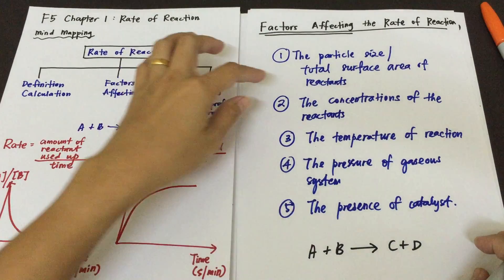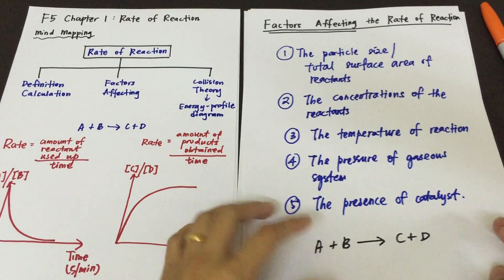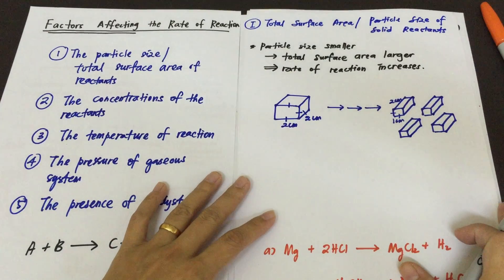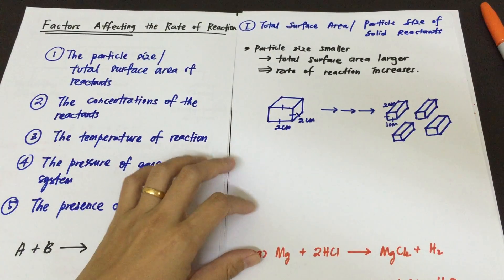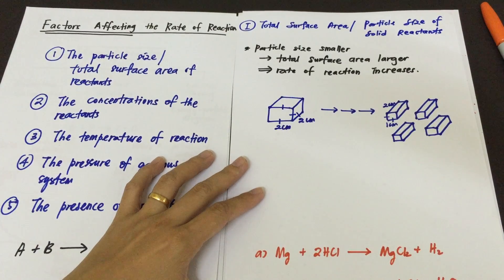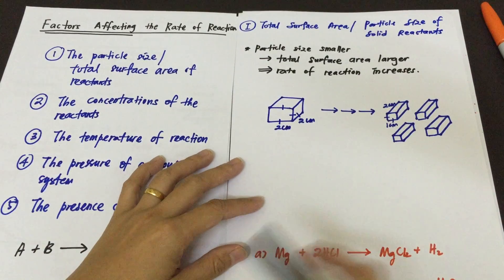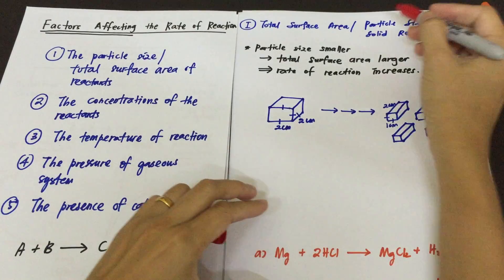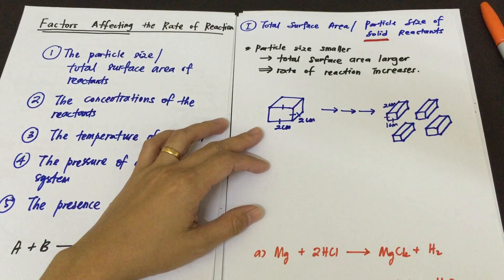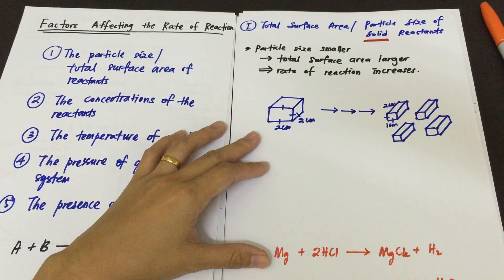Today we will focus on the first factor affecting the rate of reaction, which is the particle size or the total surface area of reactants. The total surface area or particle size must only be related to solid reactants. So remember, if you have a reaction involving solid reactants, then total surface area or particle size will be one of the factors affecting the rate of reaction.